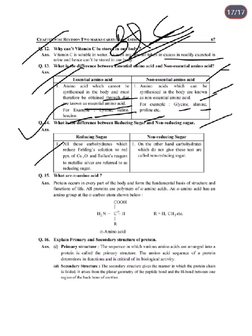Next: Difference between reducing and non-reducing sugars. Reducing sugars are carbohydrates which reduce Fehling's solution and give a positive Tollens' silver mirror test (red precipitate with Fehling's). Non-reducing sugars do not give a positive test with Tollens' agent or Fehling's solution.